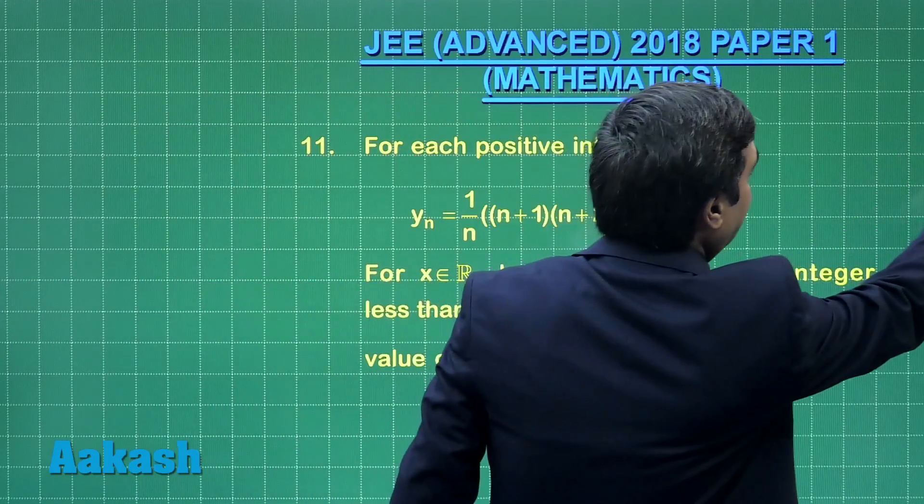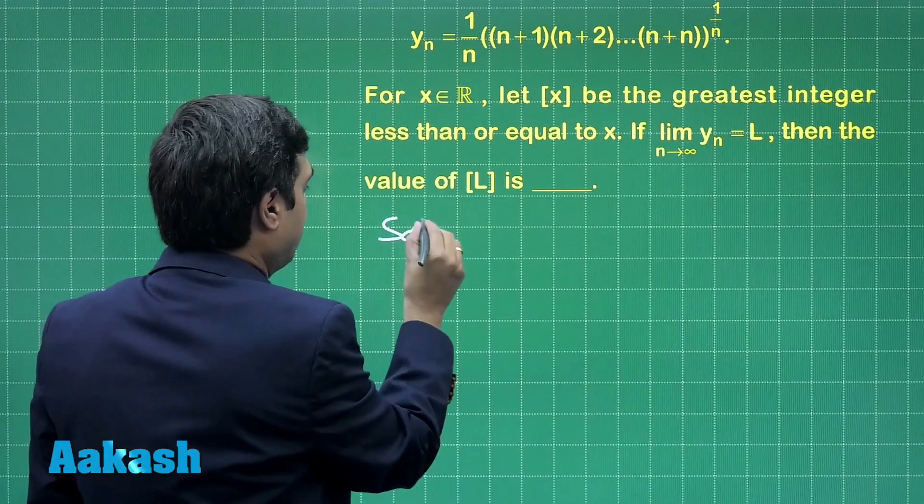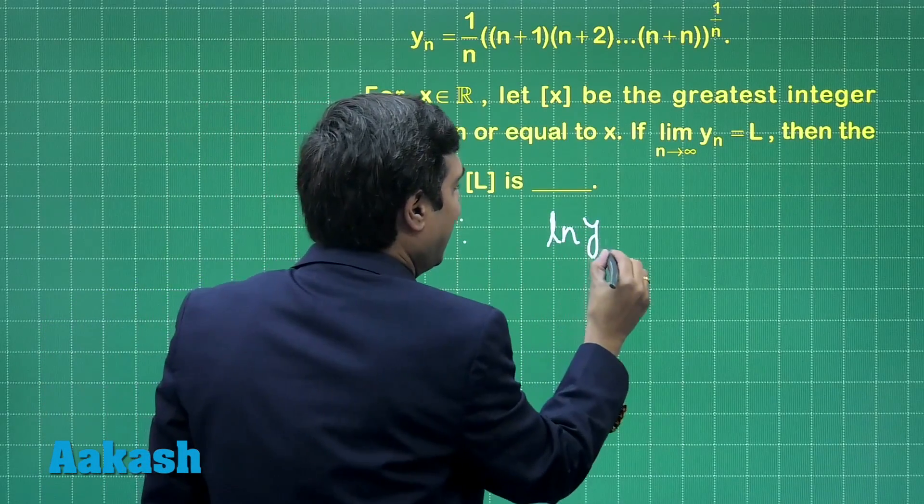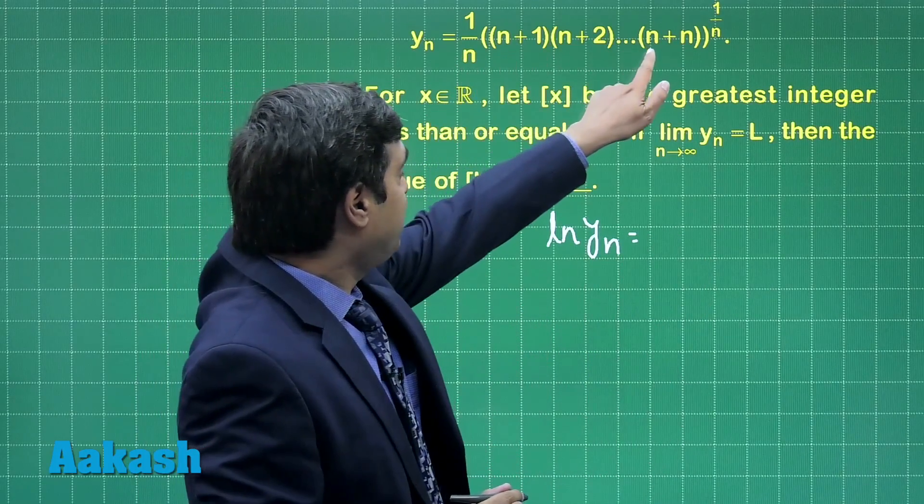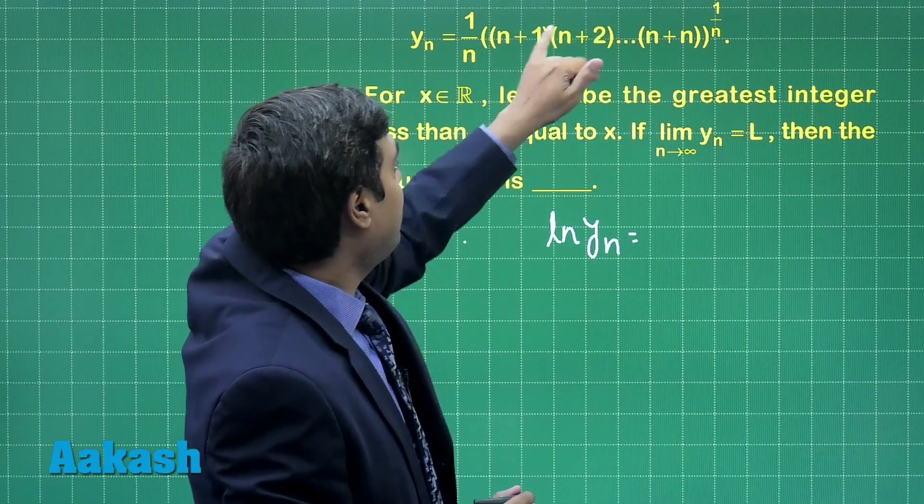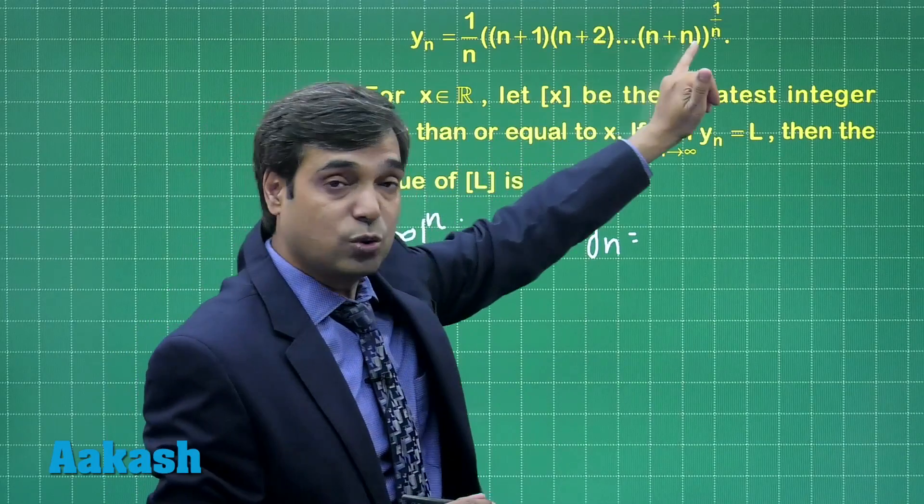Starting this question by taking log on each side, we get log y_n equals this n goes inside this bracket. It becomes n to the power n, distribute with each term like n plus 1 upon n, n plus 2 upon n, and so on.